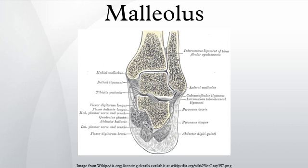The lateral surface is convex, subcutaneous, and continuous with the triangular subcutaneous surface on the lateral side of the body. The anterior border is thick and rough, and marked below by a depression for the attachment of the anterior talofibular ligament. The posterior border is broad and presents the shallow malleolar sulcus, for the passage of the tendons of the peroneus longus and brevis. The summit is rounded and gives attachment to the calcaneofibular ligament.